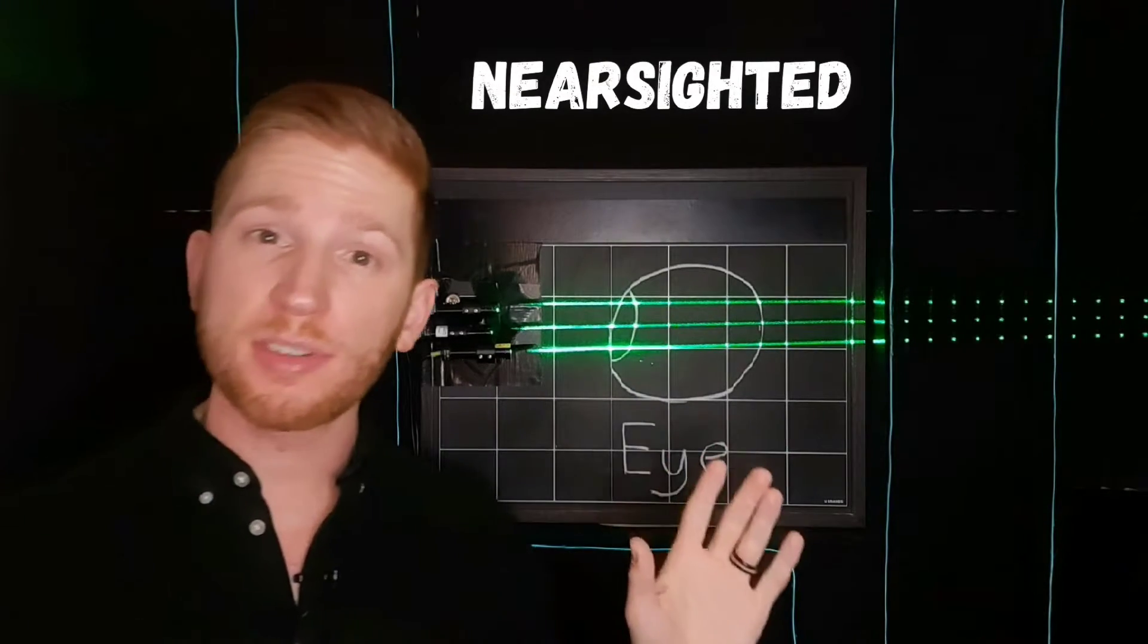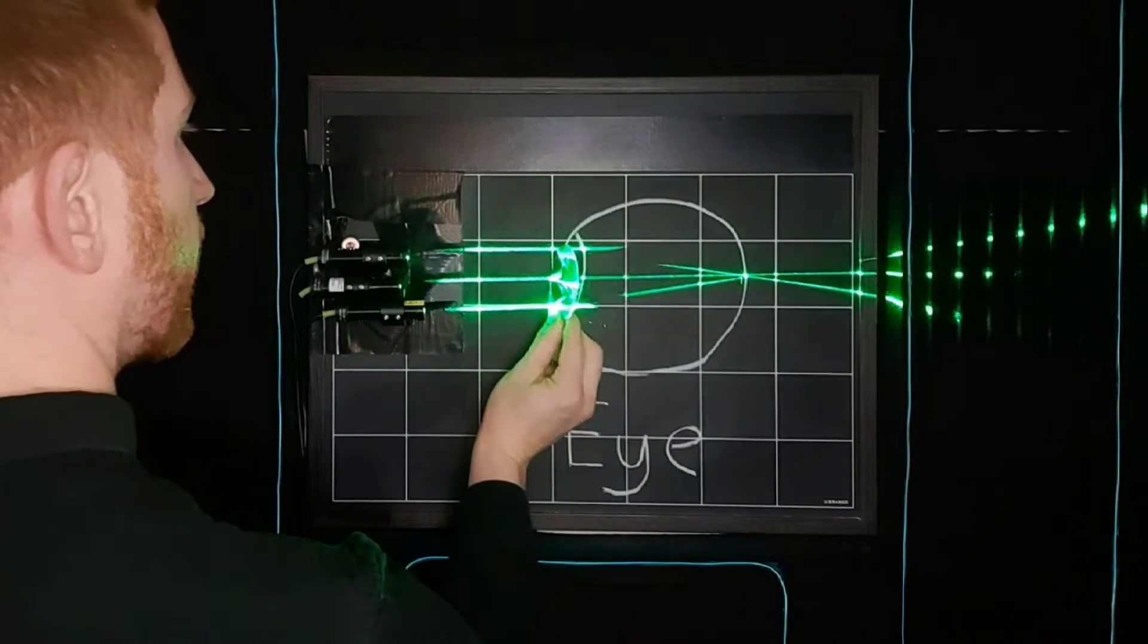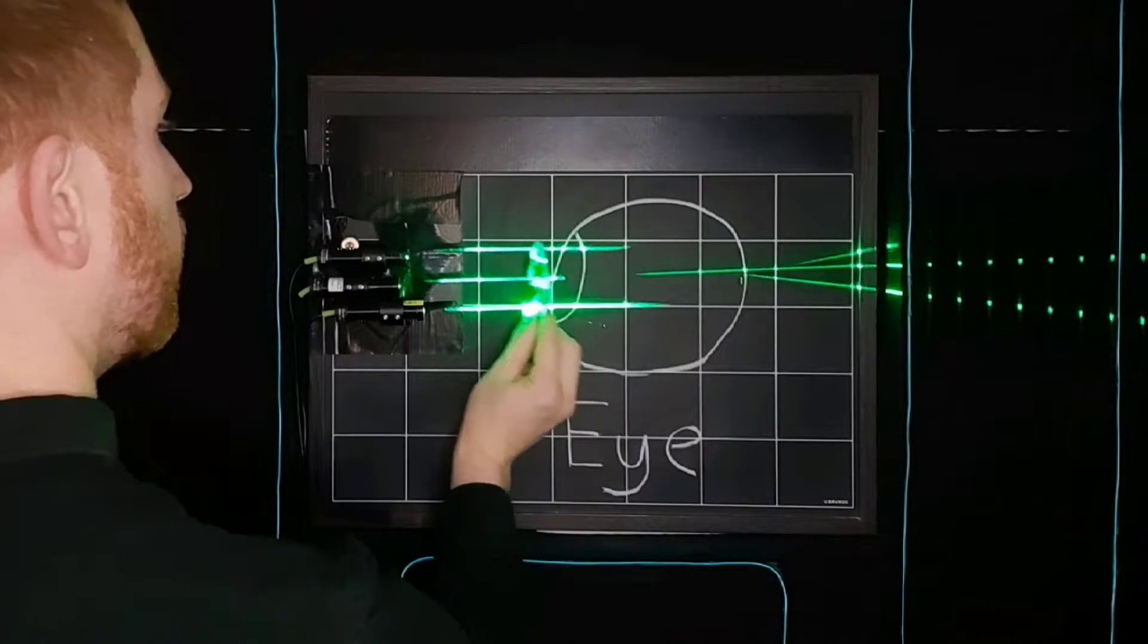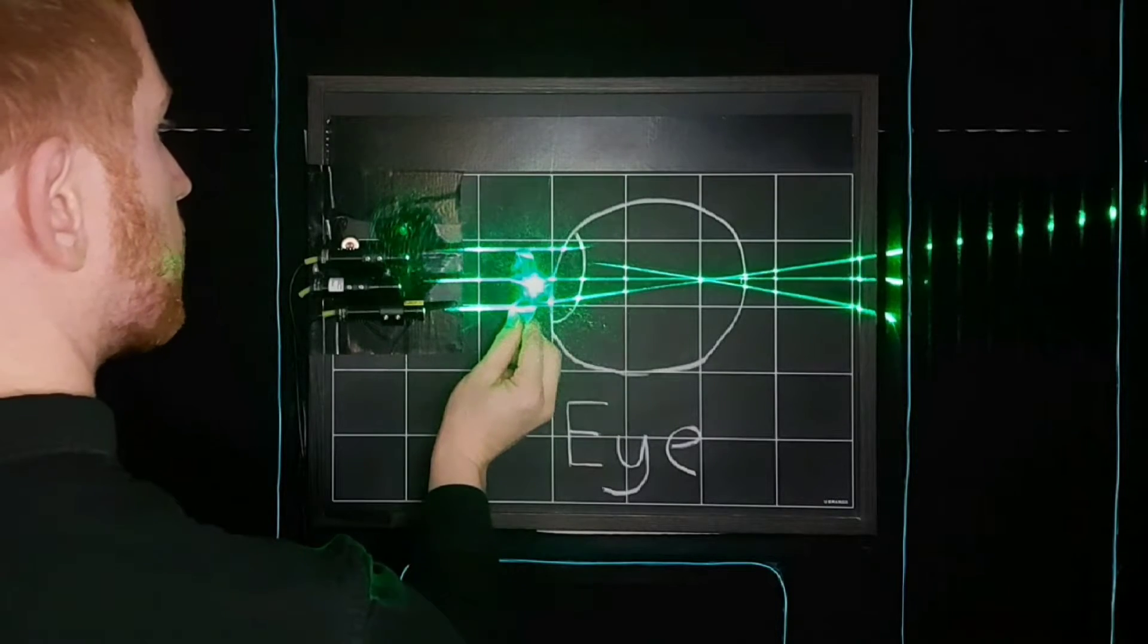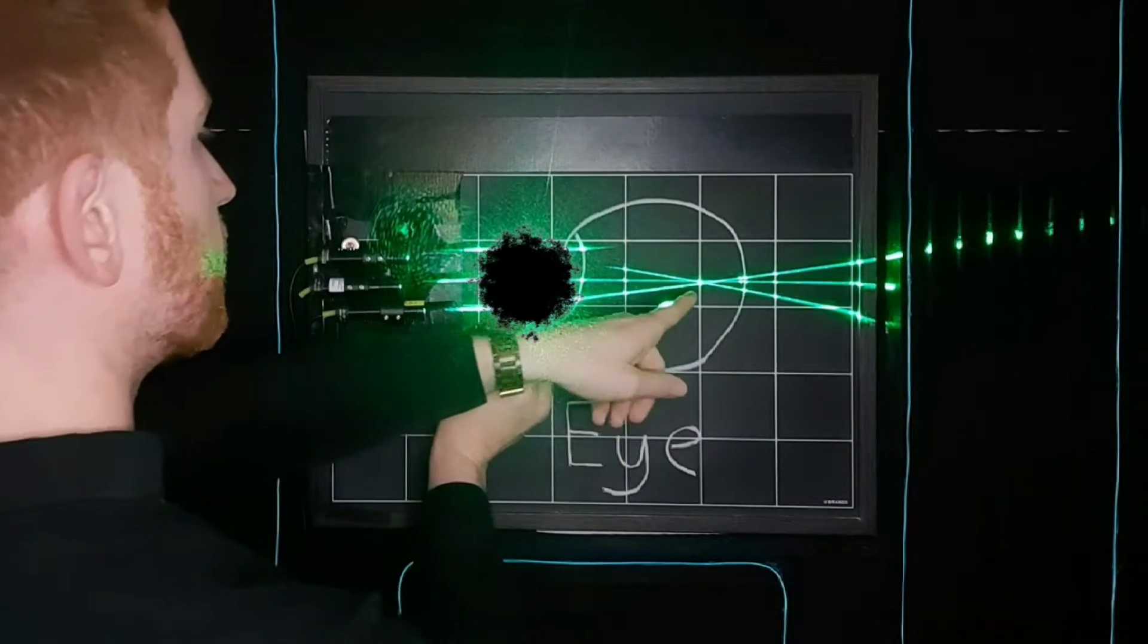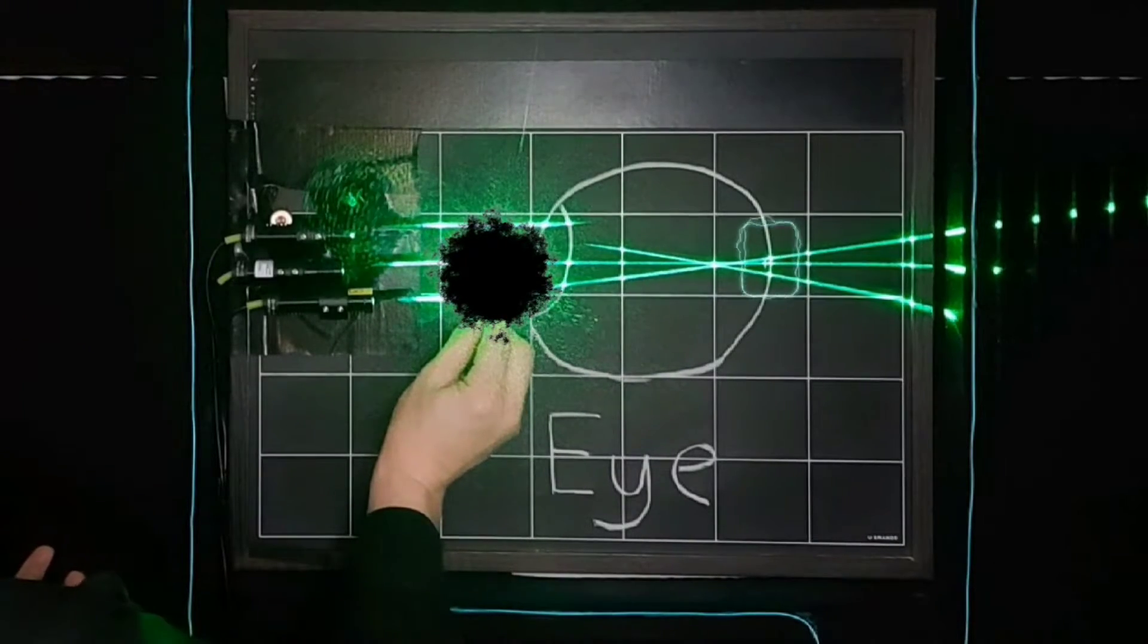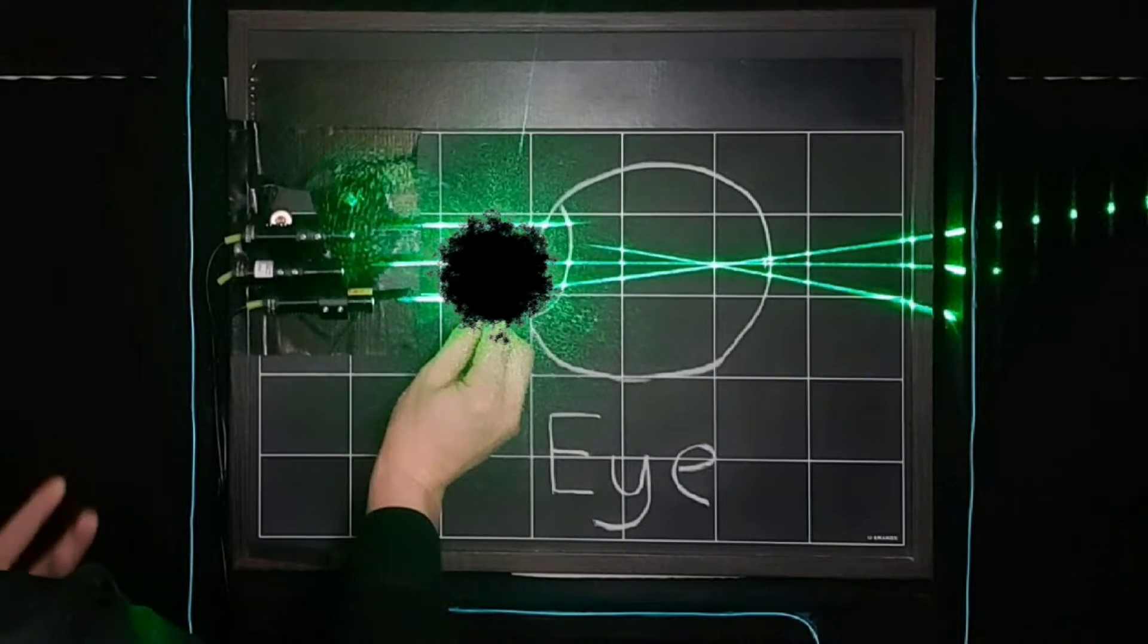If you're nearsighted, which 40% of adults are, that means that instead of your eye focusing that light onto a single point on your retina, it focuses that too near. It's too strong and it's focusing the light too soon. Because of that, instead of a nice point on your retina, you can see that the lines have spread out, and that makes everything get a little bit more blurry.